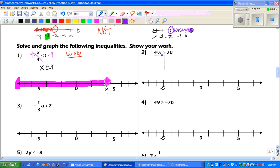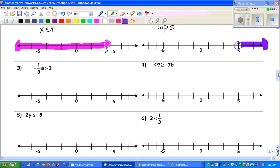There's our line. Got to divide by 4. W is greater than 5. Once again, no flip, because we did not multiply or divide by a negative. So, we're open at 5, and we're shading to the right.